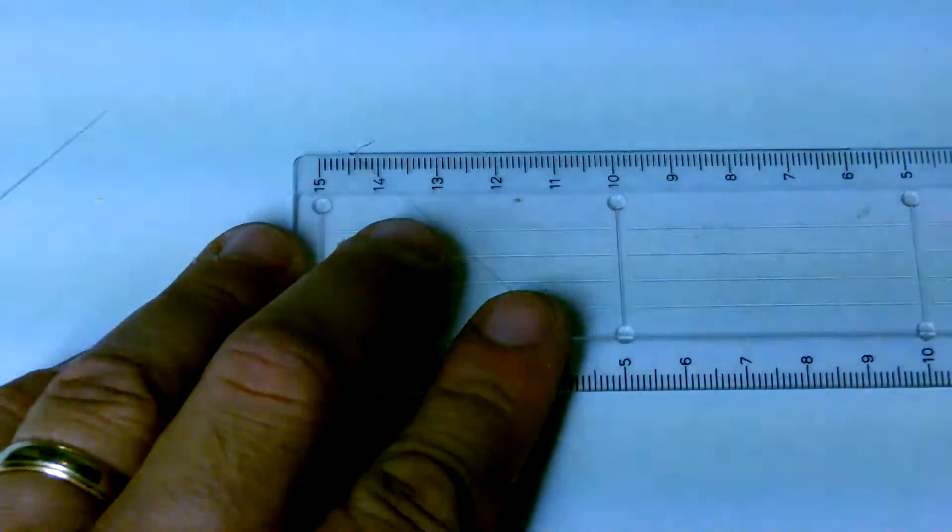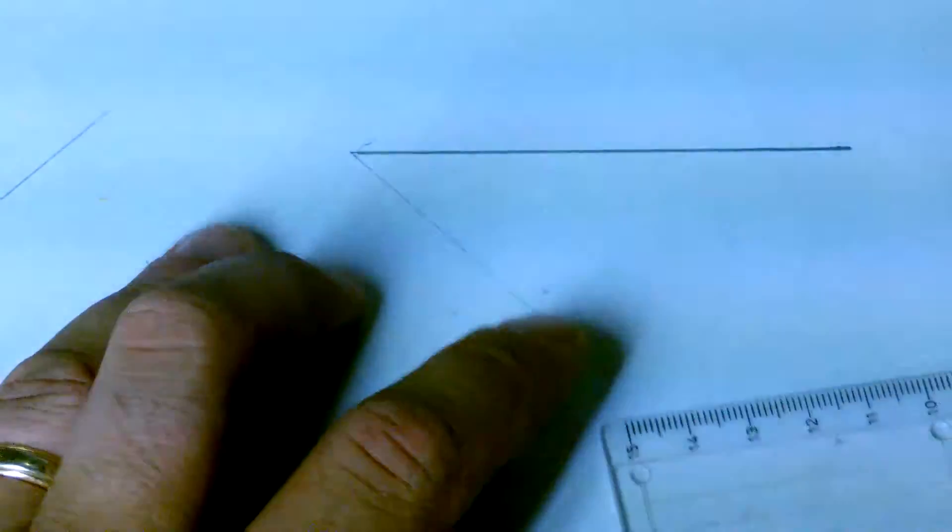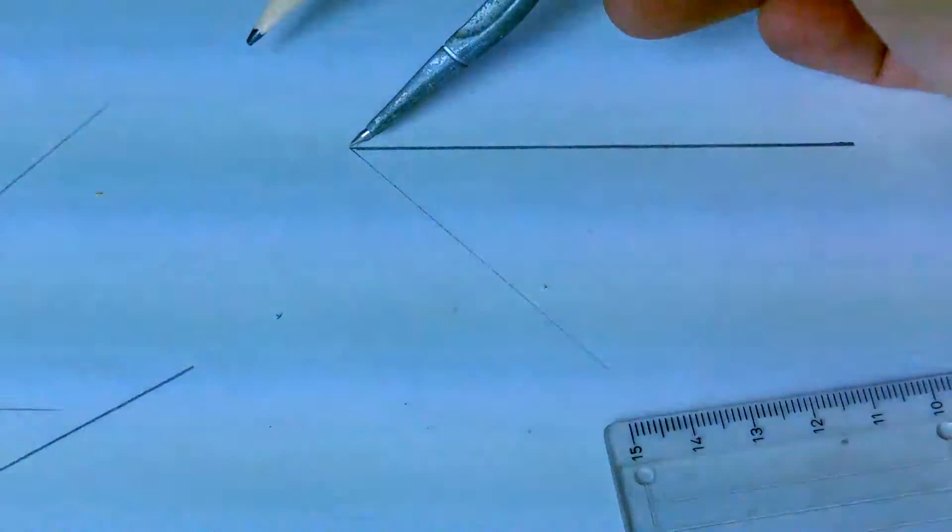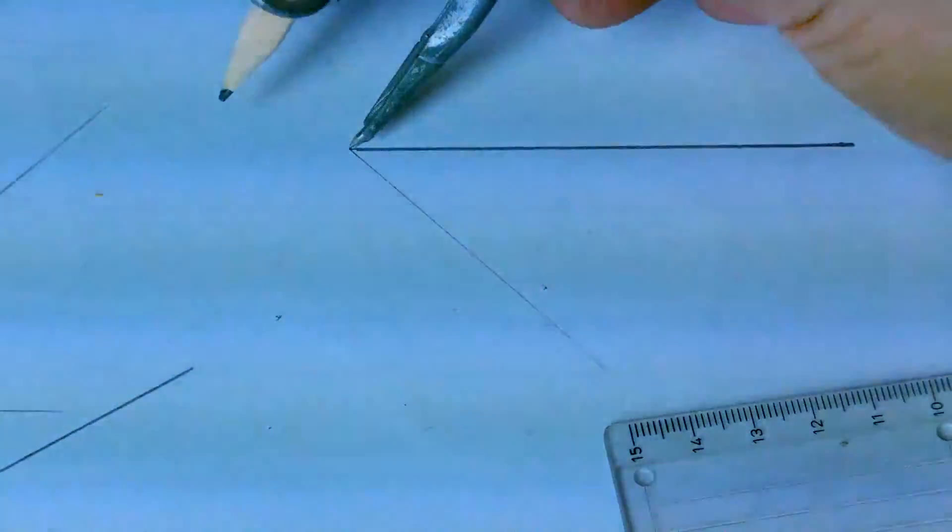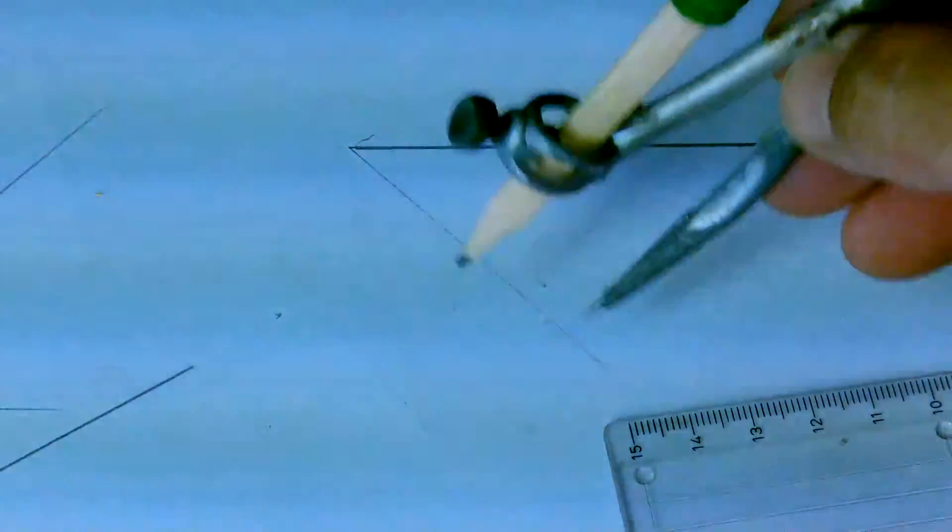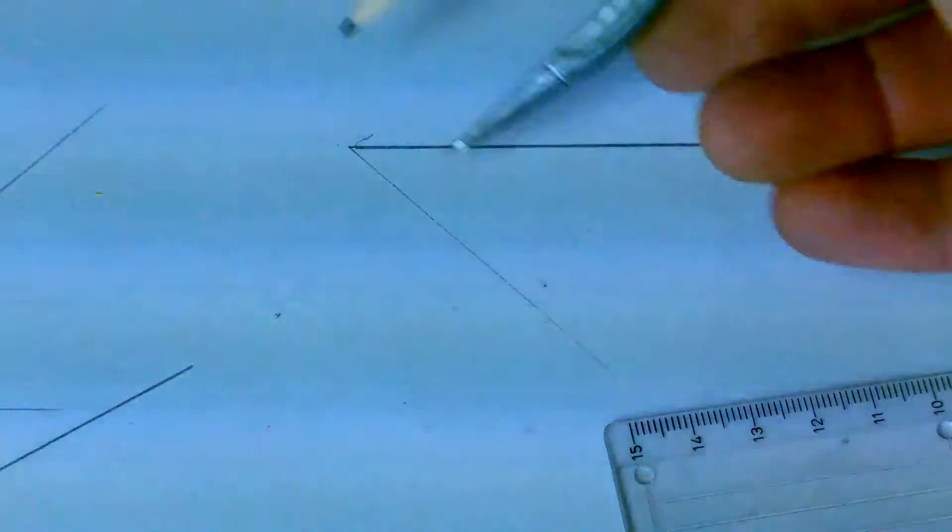So the method is like this. That's your original line and you want to divide it into five equal parts. I've taken an end of the line and drawn another line at an angle to it. It doesn't matter what angle it is and it doesn't matter what length it is.